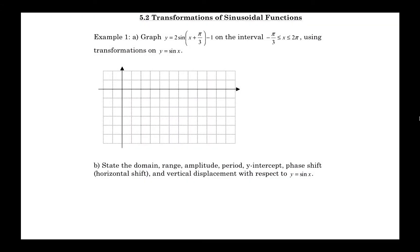Here is the first example. We want to graph y equals 2 sine in brackets x plus pi over 3 minus 1 on the interval from negative pi over 3 up to 2 pi, using transformations on sine x. You can tell it's been vertically stretched by a factor of 2, and then it's been shifted down 1. And there's also a horizontal translation of pi over 3 to the left. So let's take a look at what that's going to look like on the grid.